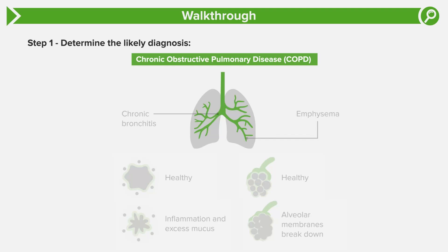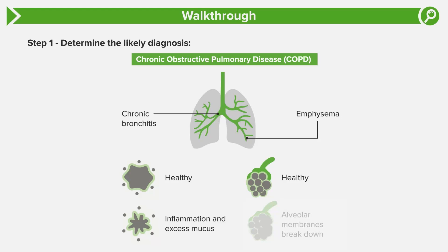COPD has two subtypes: chronic bronchitis and emphysema. In chronic bronchitis, the term breaks down to bronchi — the airways — plus '-itis,' meaning inflammation, and 'chronic' indicating its chronicity. In the healthy case, the airway is open with little mucus, whereas in chronic bronchitis we see inflammation and excess mucus production, leading to cough and difficulty expiring air. In emphysema, the alveolar membranes break down — the alveoli are often described as grapes on a vine — resulting in decreased surface area for gas transfer and loss of alveolar recoil, making it difficult to expire air.